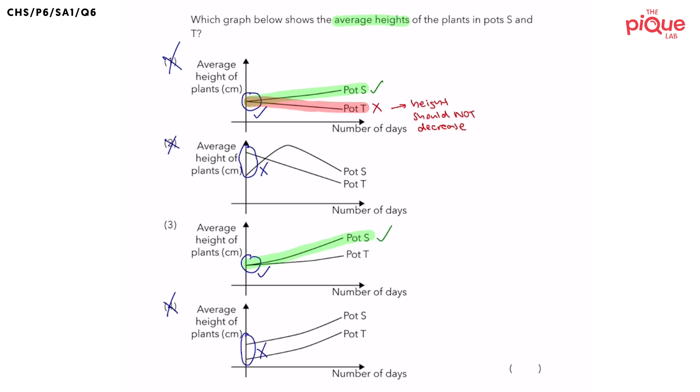And that is what we want, right? And how about the average height of plants in pots T? It is also increasing, which is what we want.